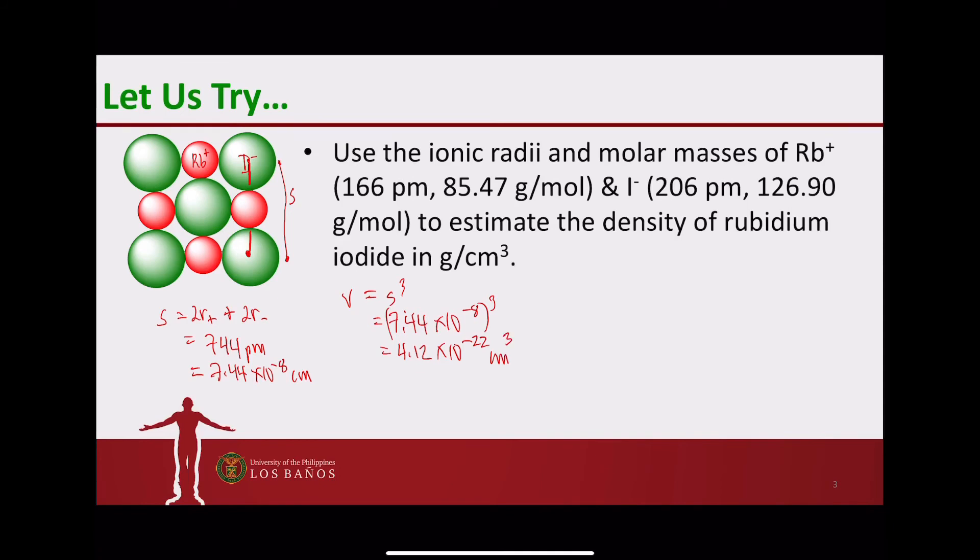To get the mass, basically we're just going to sum up the mass of rubidium and the mass of the iodide per unit cell. So there are four rubidium ions per unit cell, molar mass is 85.47 grams per mole. Similarly, there are also four iodide ions per unit cell and molar mass is 126.9 grams per mole. So what you need to do is relate ions to moles, and the way that you can relate this is through Avogadro's number.